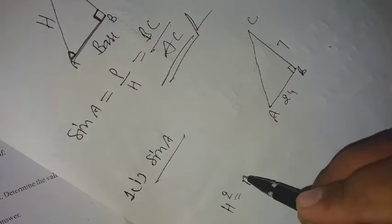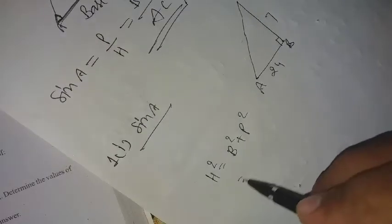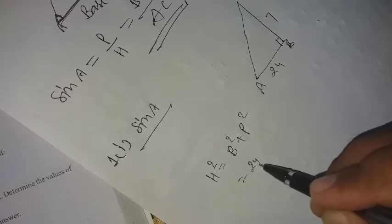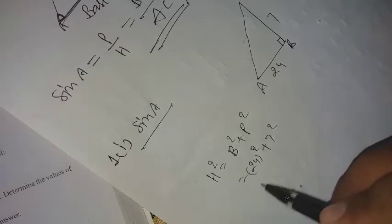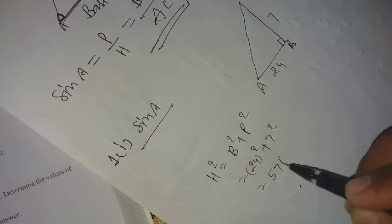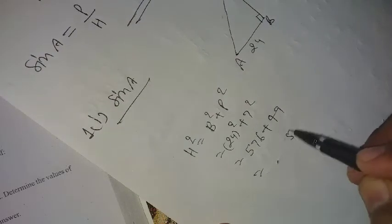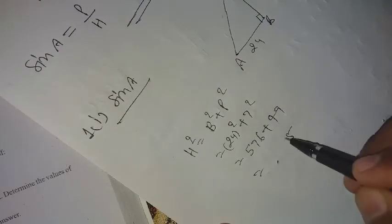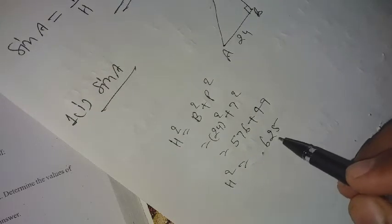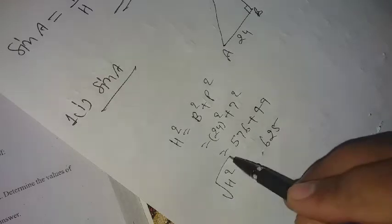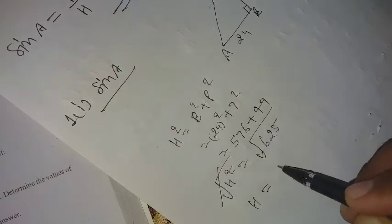We have to find the hypotenuse, so we will apply the Pythagoras theorem. Hypotenuse squared equals base squared plus perpendicular squared. That is 24 squared plus 7 squared, which is 576 plus 49. We add them: 625. Hypotenuse squared equals 625.